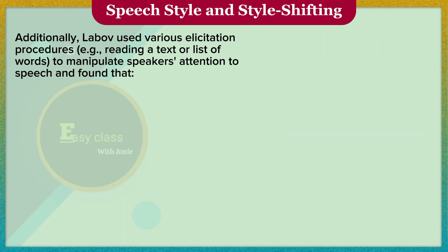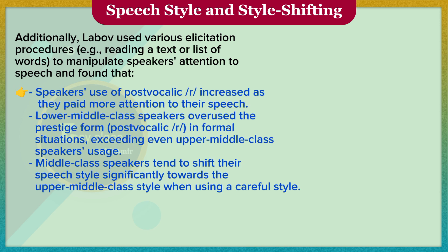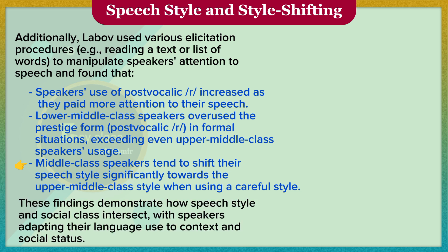Additionally, Labov used various elicitation procedures — for example, reading a text or list of words — to manipulate speakers' attention to speech, and found that speakers' use of post-vocalic R increased as they paid more attention to their speech. Lower-middle-class speakers overuse the prestige form post-vocalic R in formal situations, exceeding even upper-middle-class speakers' usage. Middle-class speakers tend to shift their speech style significantly towards the upper-middle-class style when using a careful style. These findings demonstrate how speech style and social class intersect, with speakers adapting their language use to context and social status.